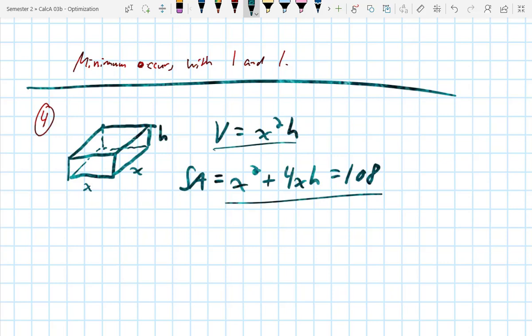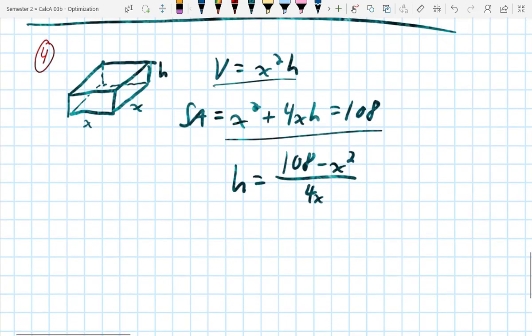Yeah. Not yet. Combine it. Because I've got two variables in the volume. I want a single variable. So let's make this h is equal to 108 minus x squared over 4x, which for the purposes of combining it should be, sorry, this is over 4x, not over negative 4x.